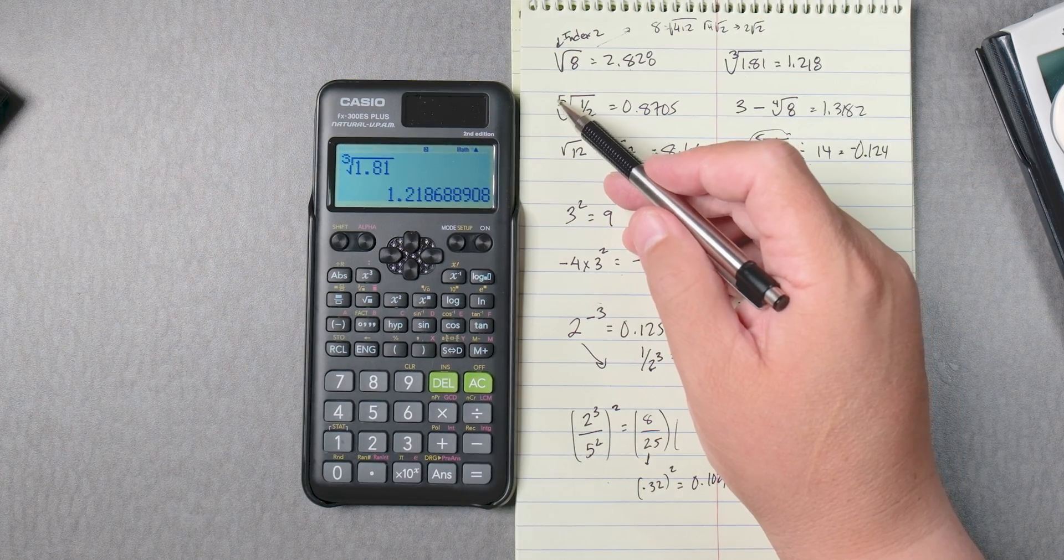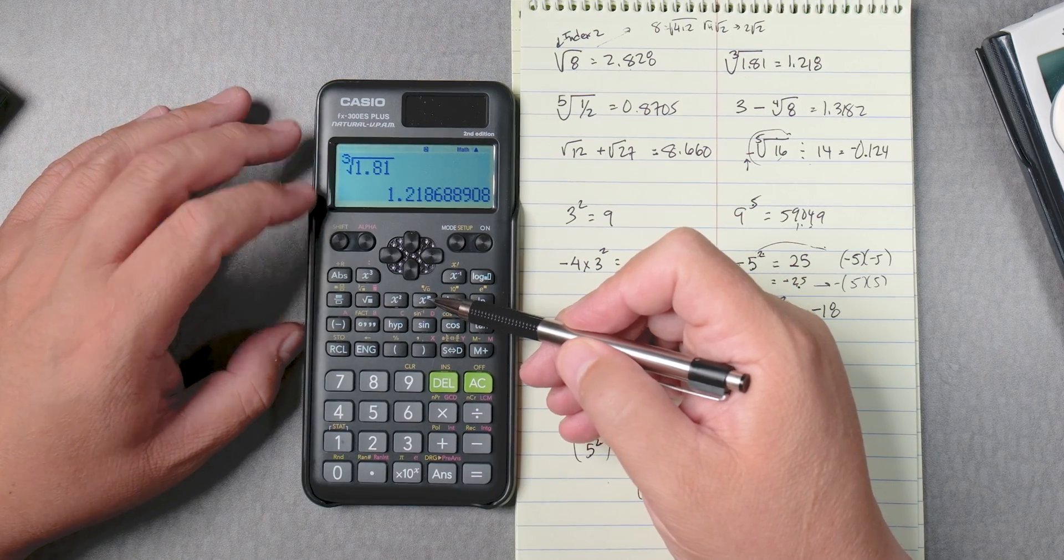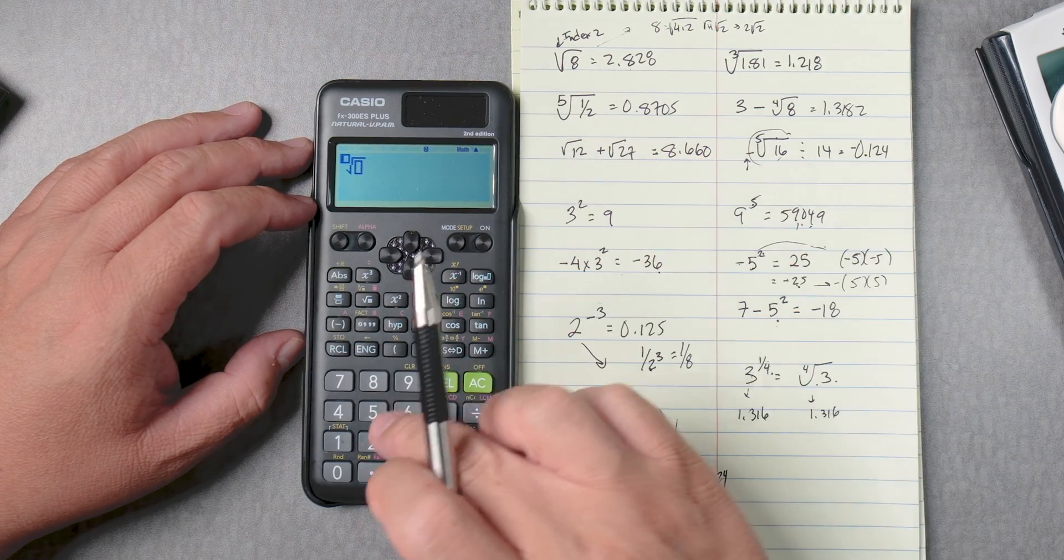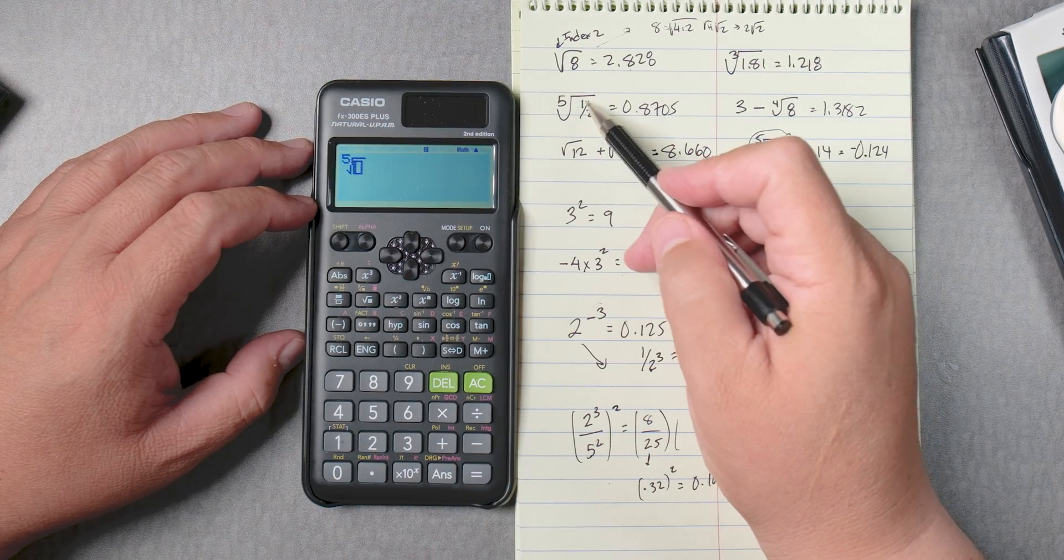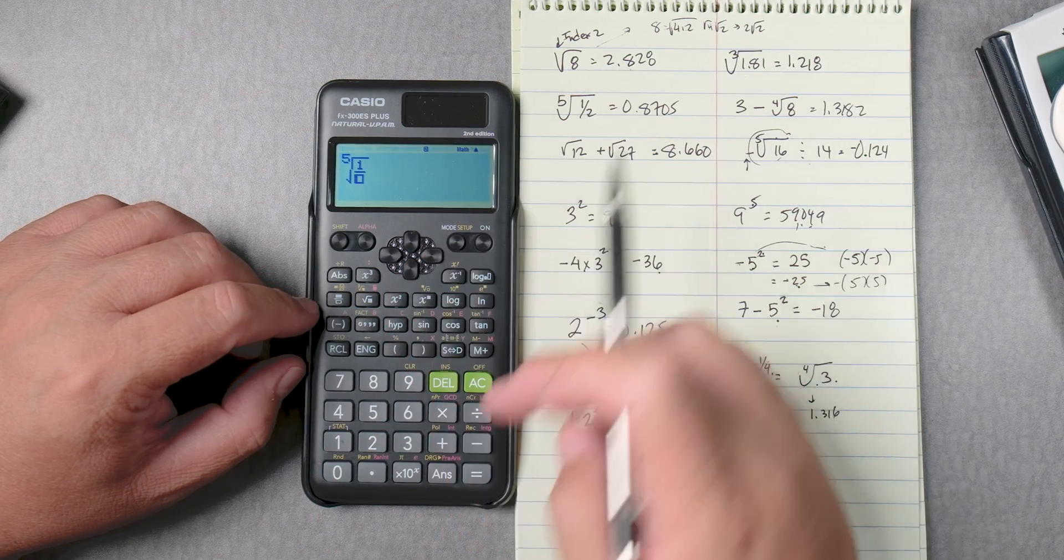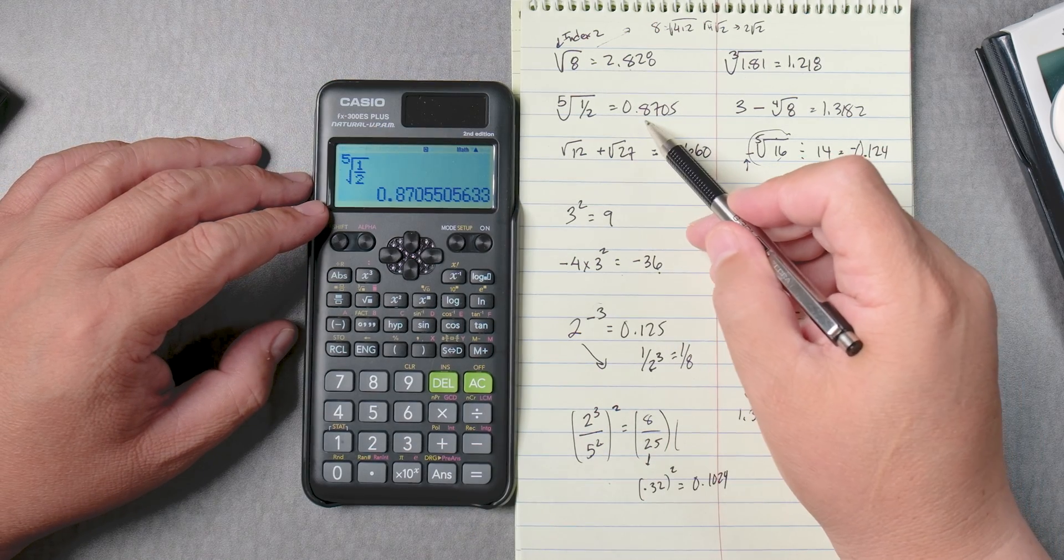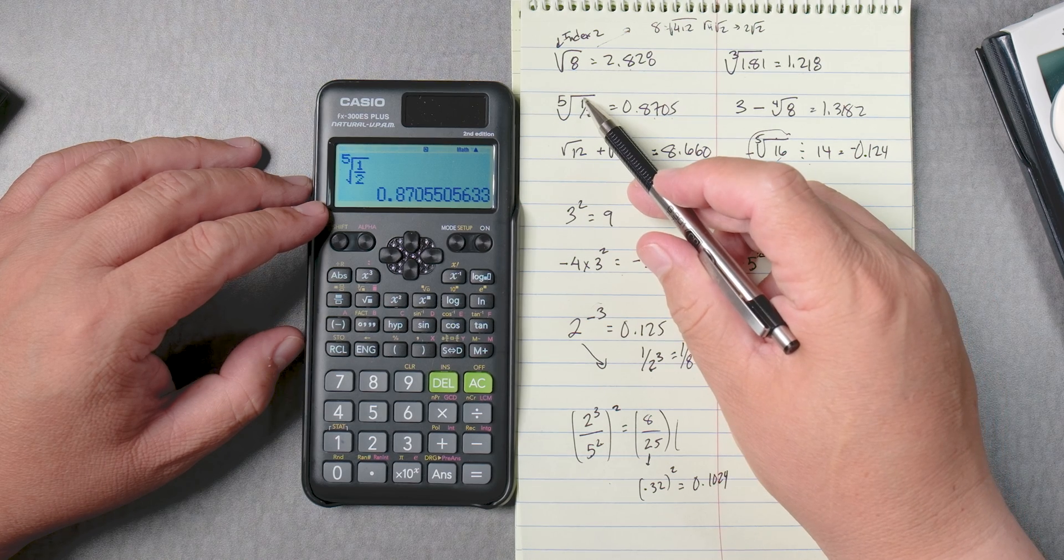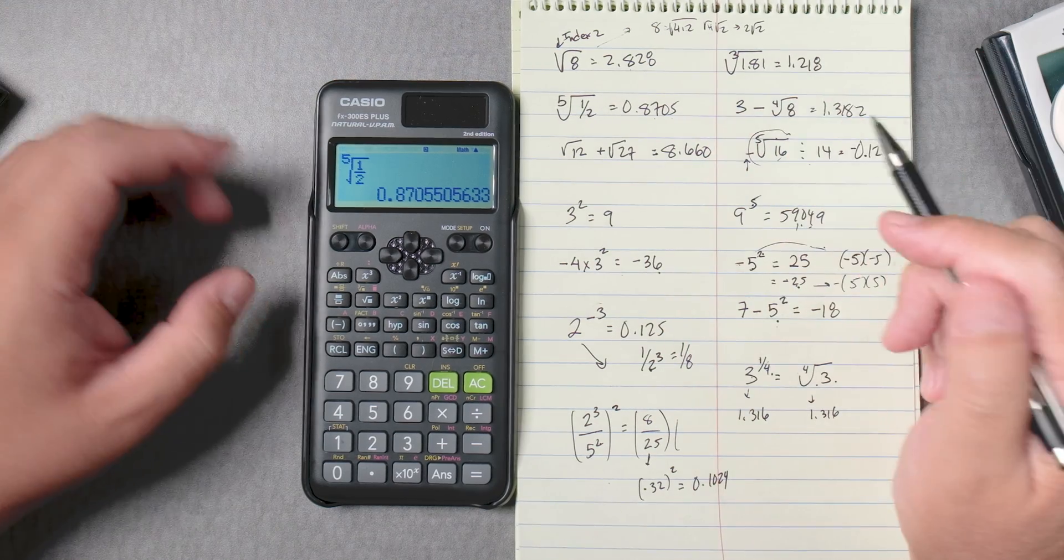So here we have the fifth root of 1/2. We're going to use that X to the box key, but we're going to press shift and press that button right there. We need 5, the fifth root, and then we use the arrows, and then half. So we'll use the fraction button, 1, and then go down, 2, and then press equals. And it gives you 0.8705. If you can calculate this first, same thing, if that's 0.5, you can say the fifth root of 0.5 if you want to.